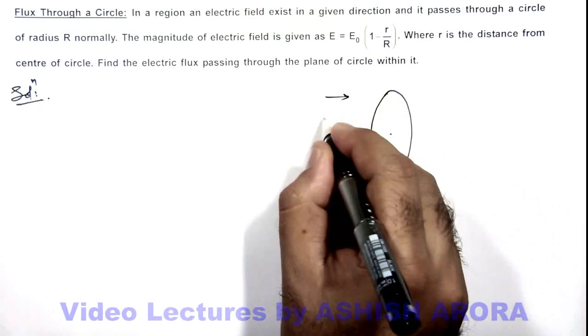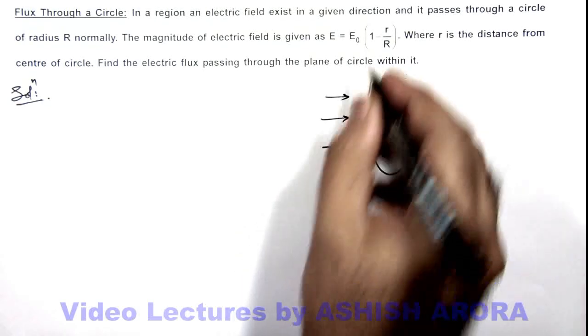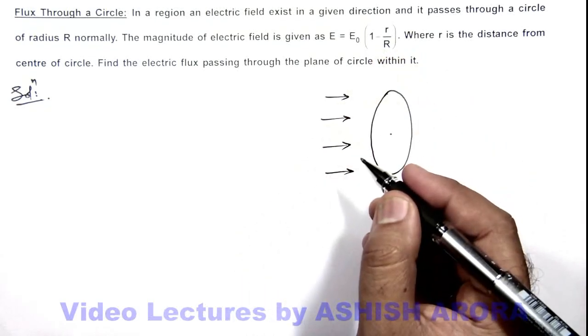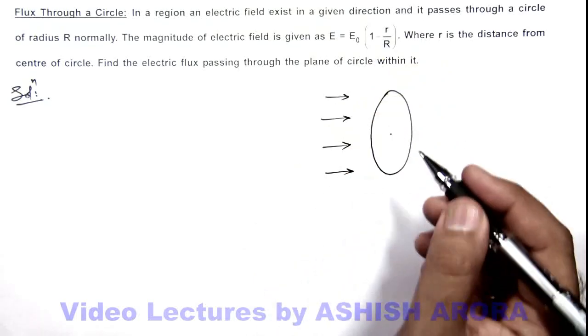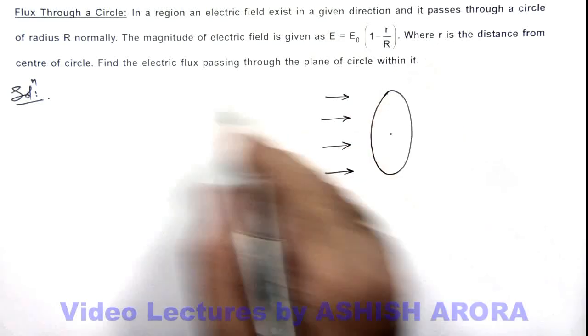And normally an electric field is incident onto this circle where electric field is given by this function, and we are required to find the flux through this circle as it varies with the distance r from the center of circle.